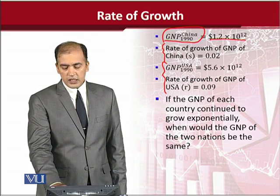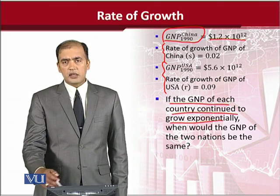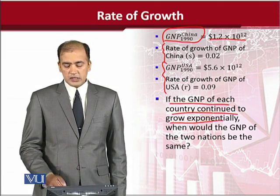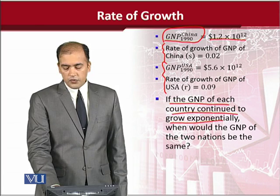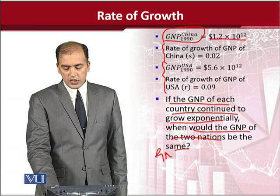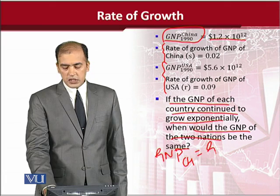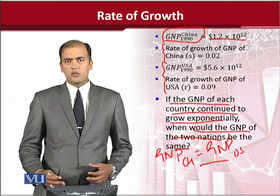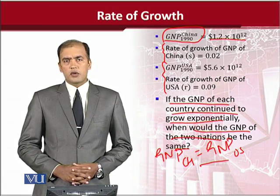Now in other words, what we are trying to say is that if we are having this assumption that they are increasing exponentially, the GNPs of both countries, how much time will be required for the GNPs of the two nations to become the same? That is GNP of China equals GNP of U.S. So this is this converging point that we can find using logarithmic functions.